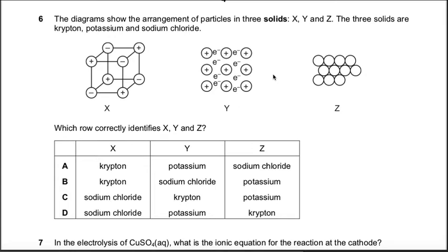Question number six: the diagram shows the arrangement of particles in three solids X, Y, and Z. The three solids are krypton, potassium, and sodium chloride. Which row correctly identifies X, Y, and Z? X is ionic compound because it is made up of oppositely charged ions: positive ion, negative ion, positive ion, negative ion. So X is the ionic compound. Y is made up of positively charged ions and a sea of electrons, so Y is metal. So third one would be krypton. Krypton is gas at room temperature, but you can freeze any gas at lower temperature. So X is ionic compound, meaning sodium chloride. Y is metal, meaning potassium, and Z is krypton. So your answer is D.